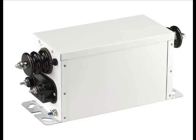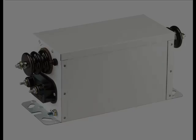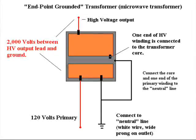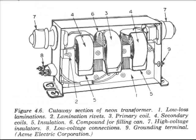There are a few different ways high voltage transformers are connected. One is what's known as endpoint grounded. Endpoint grounded transformers have one end of the secondary winding connected to the core, and the core is then grounded. Either the ground line or the white neutral line in an outlet can be used to ground the transformer. In this way, one end of the secondary winding has zero volts, and the other end is a live high voltage output lead. Microwave oven transformers and some furnace ignition transformers are connected this way. Another type of transformer is center tapped, or what's known as midpoint grounded.